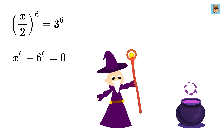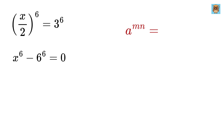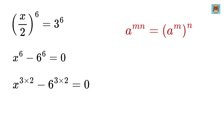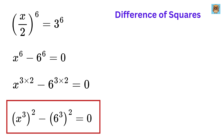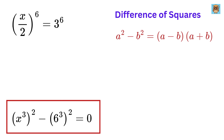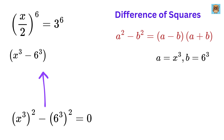Here comes the real magic. We will use another exponent rule: a raised to the power m times n can also be written as a raised to m, whole raised to n. Now, 6 can be written as 3 times 2, so x to the 6 can be written as x cubed, whole squared, and similarly 6 to the 6 becomes 6 cubed, whole squared. Our equation is now a difference of squares. The difference of squares formula states that a squared minus b squared equals a minus b multiplied by a plus b. Setting a as x cubed and b as 6 cubed, this becomes x cubed minus 6 cubed, multiplied by x cubed plus 6 cubed, equals 0.